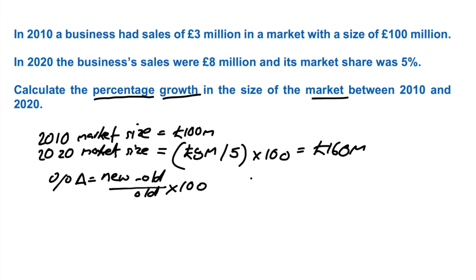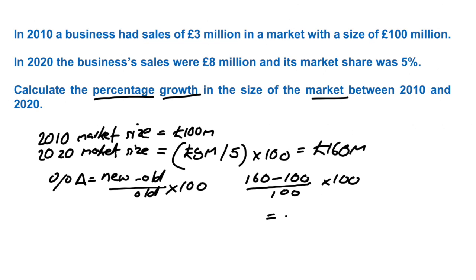And if we just apply the numbers into that for this, it's going to be 160 minus 100 — because the new number in 2020 is 160 — divided by 100. And the answer is clearly going to be 60%. That's a 60% increase.